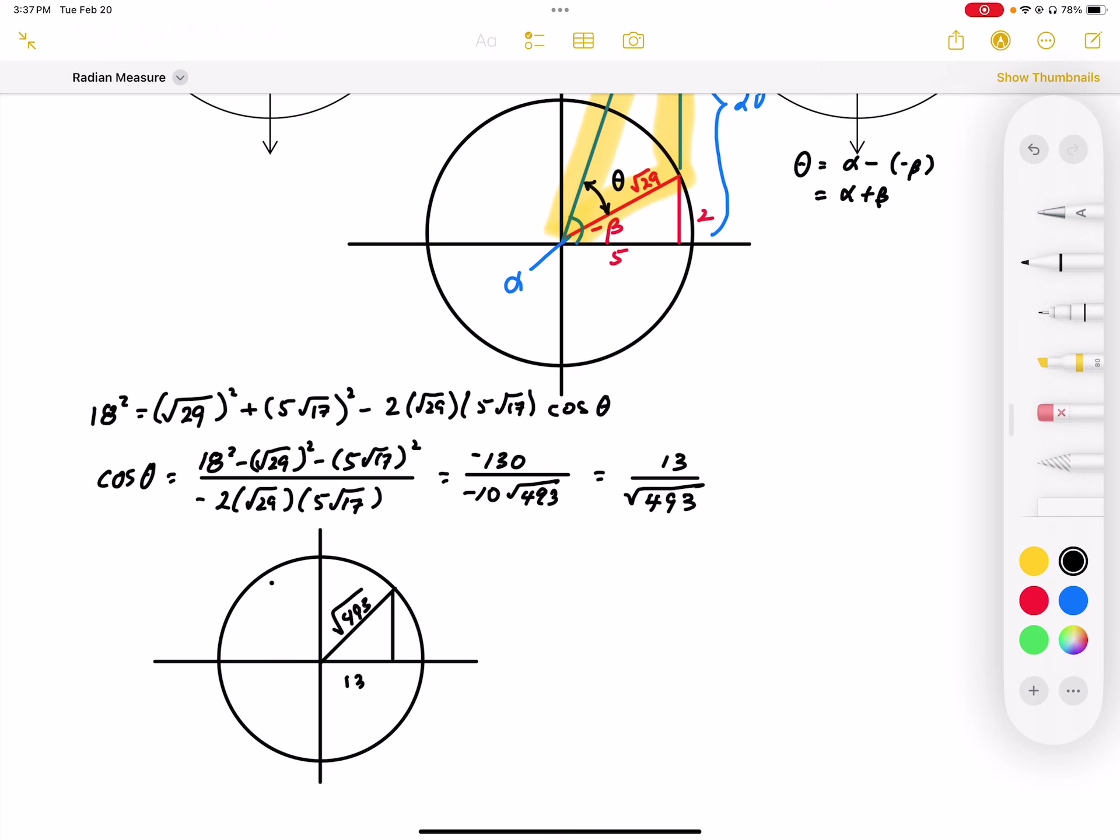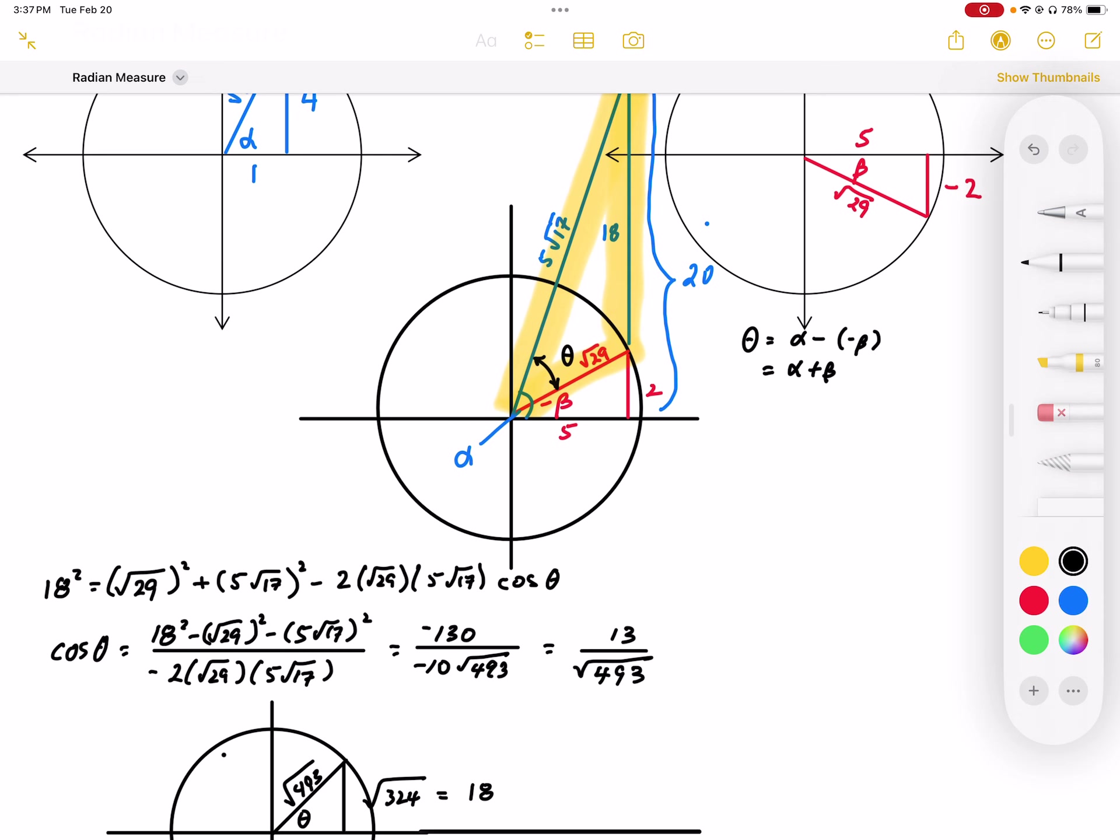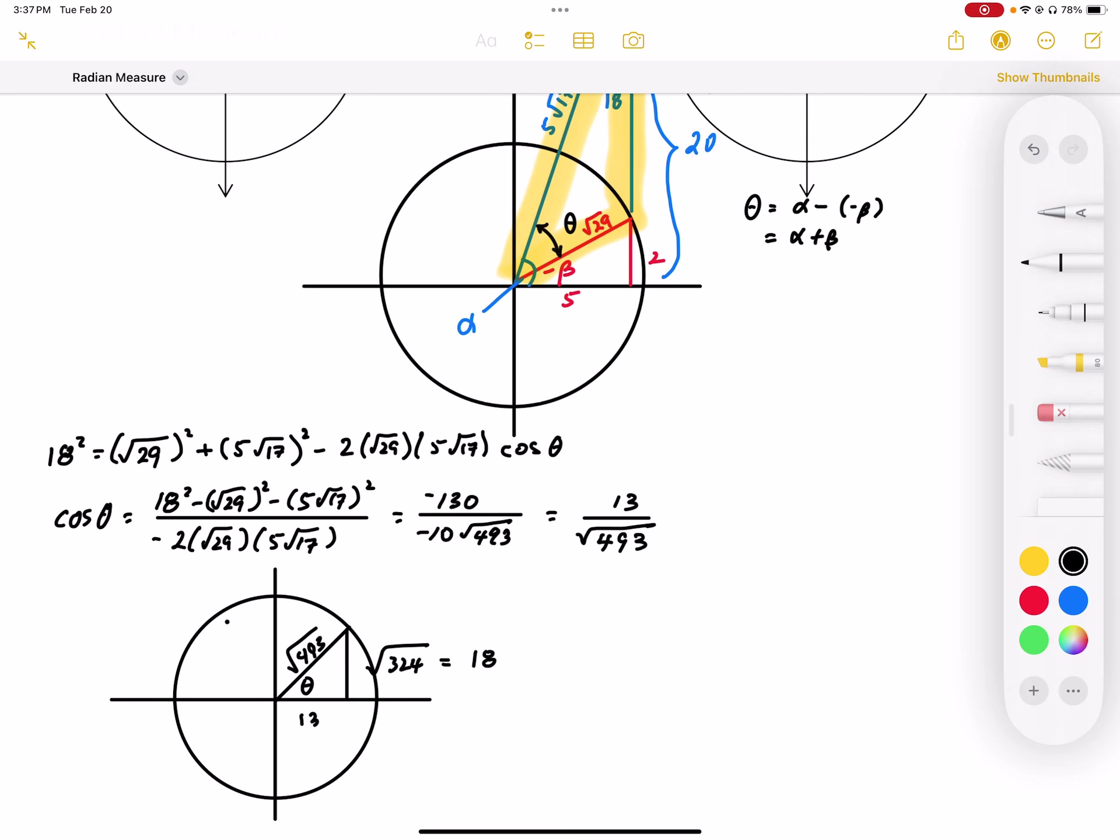And using Pythagoras, I'm going to have 493 minus 13 squared. That gives me square root of 324, which equals 18. Since that is my angle theta—the same theta, although I'm not using that scaling triangle, I've now used the right triangle for that angle theta—I've got the three sides of that.